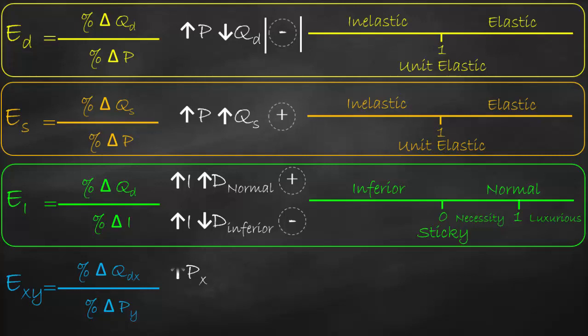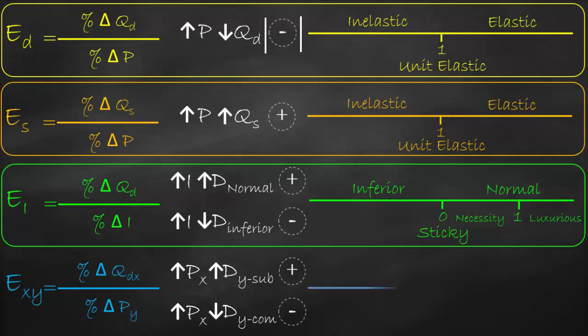If the price of good X goes up and the demand of good Y also goes up, we have a positive relationship — these are substitute goods. If the price of good X goes up but the demand of good Y goes down, that's a negative relationship — these goods are complements. The benchmark for cross price elasticity is zero, meaning the goods are independent and changing the price of one does not affect the demand for the other.